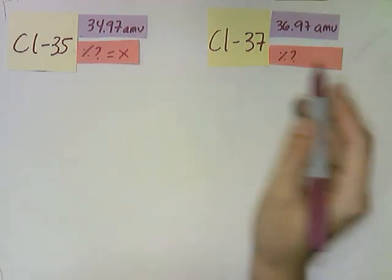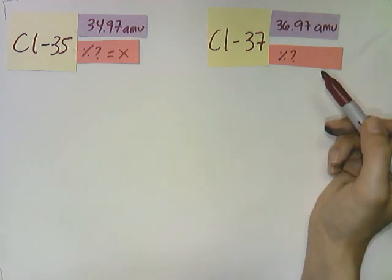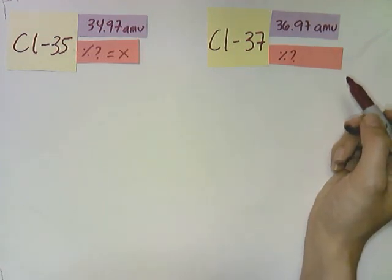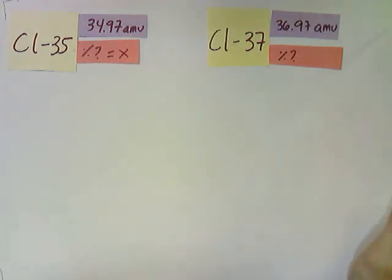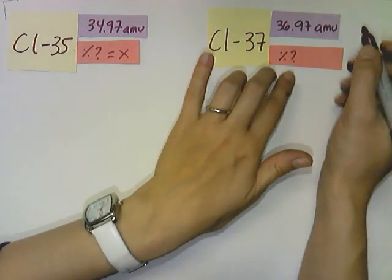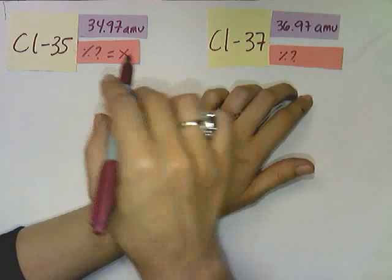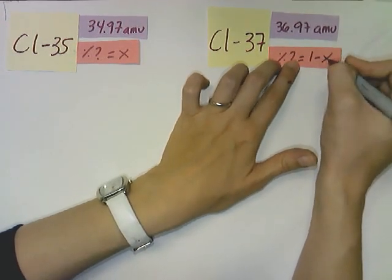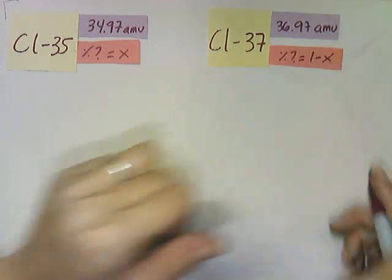However, if we have x and y, then we can't get into a problem because we would have two variables to solve for. And we don't need extra problems here. So one problem would be enough. So if this is x, we can say that this is 1 minus x.